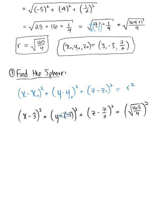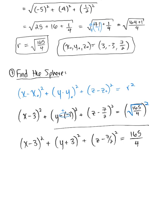We've got two simplifications: this negative times a negative produces a positive, and on the right side the square root and square cancel, leaving us with the final answer: (x - 3)² + (y + 3)² + (z - 7/2)² = 165/4.